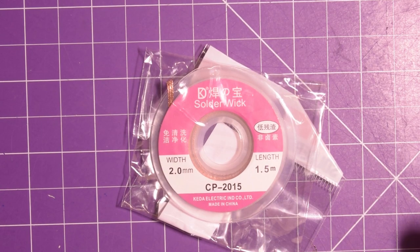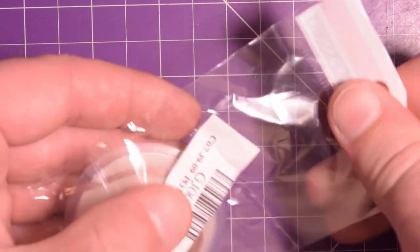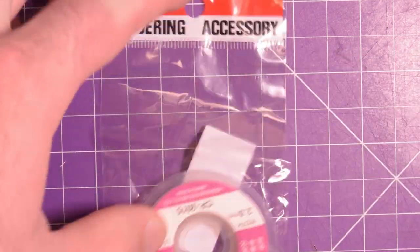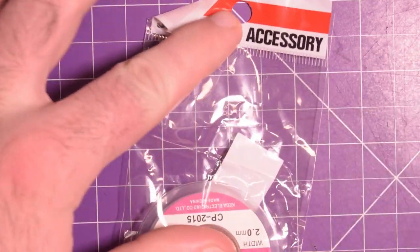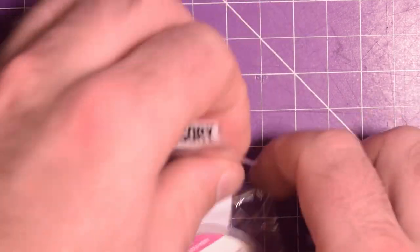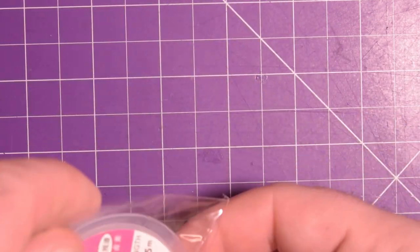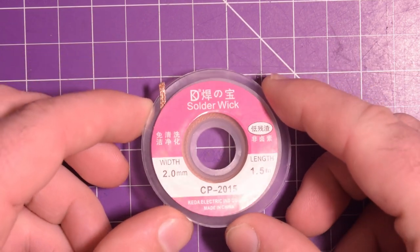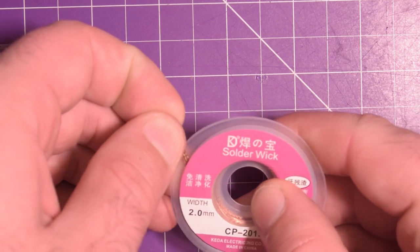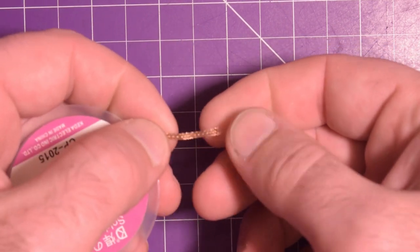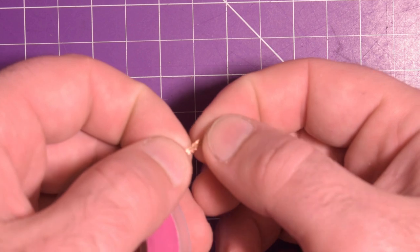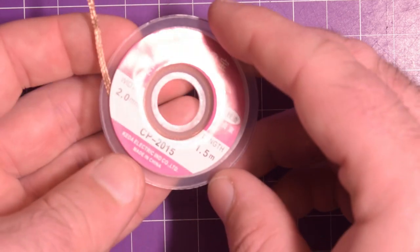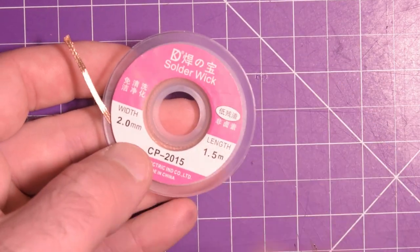This is solder wick or desoldering braid. This goes with the theme of the channel quite well. This is from AliExpress. If you do any soldering or repairing of stuff you should probably have some of this in stock and I didn't have any so I had to buy it. Basically you use this to desolder components off of boards. It's like a braid of copper and some of these are impregnated with flux.